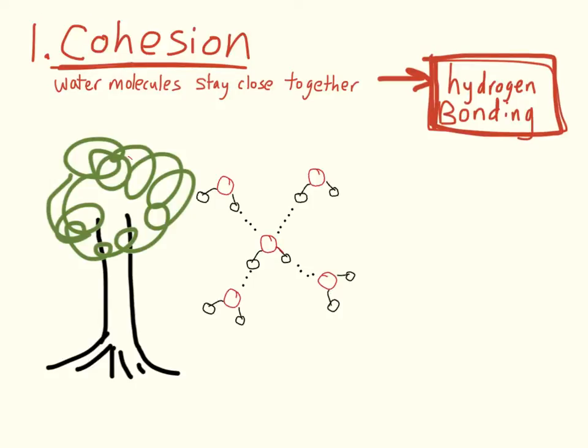Cohesion plays a major role in the transport of water and dissolved nutrients in plants. As you know, water has to be transported upwards against the force of gravity. So how does cohesion help with this? Well, as water molecules evaporate from the leaves of the plants, it pulls the water molecules underneath it upwards.